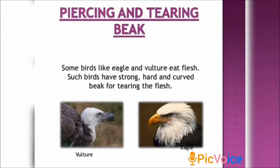Now we are going to see about the eagle and vultures and how their beak structure will be. Some birds like eagles and vultures eat flesh of other animals. So they have a strong, heavy and curved beak for tearing the flesh. We call it a piercing and tearing beak. So eagles and vultures have a strong, heavy and curved beak for tearing the flesh — a sharp hooked beak.